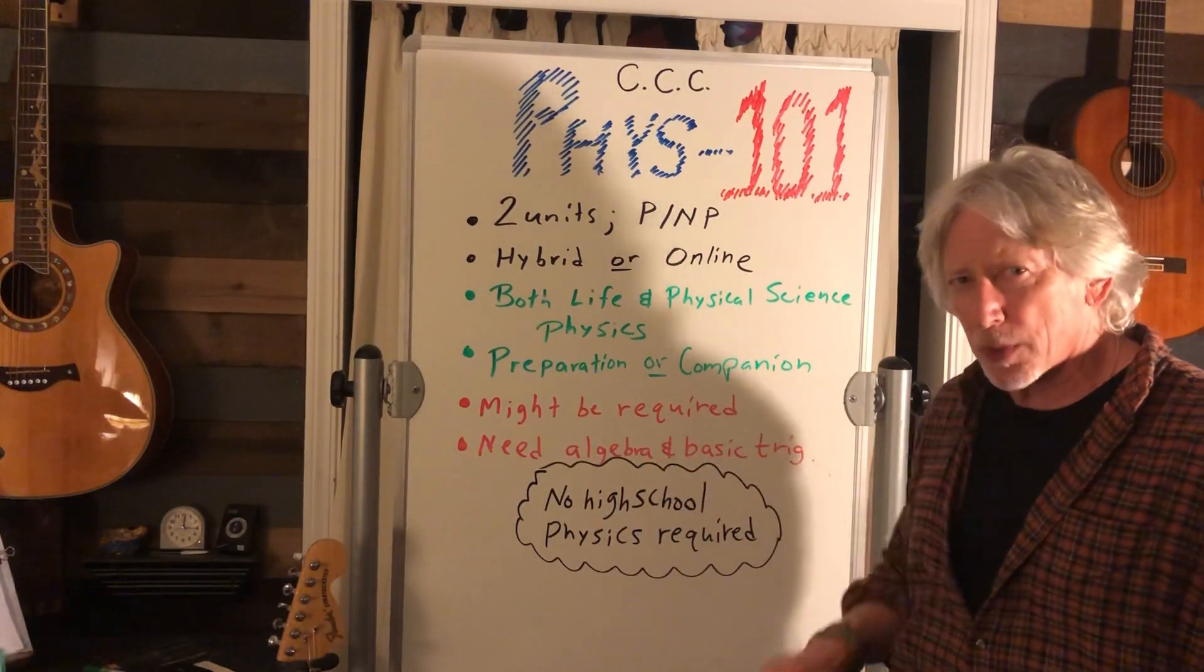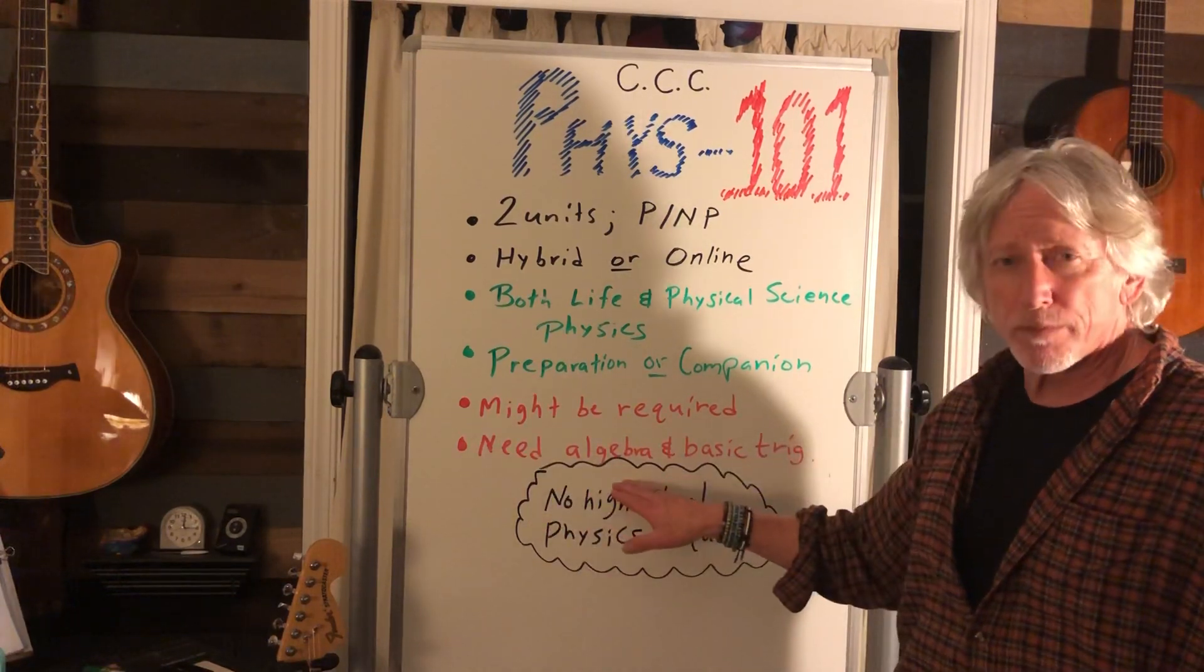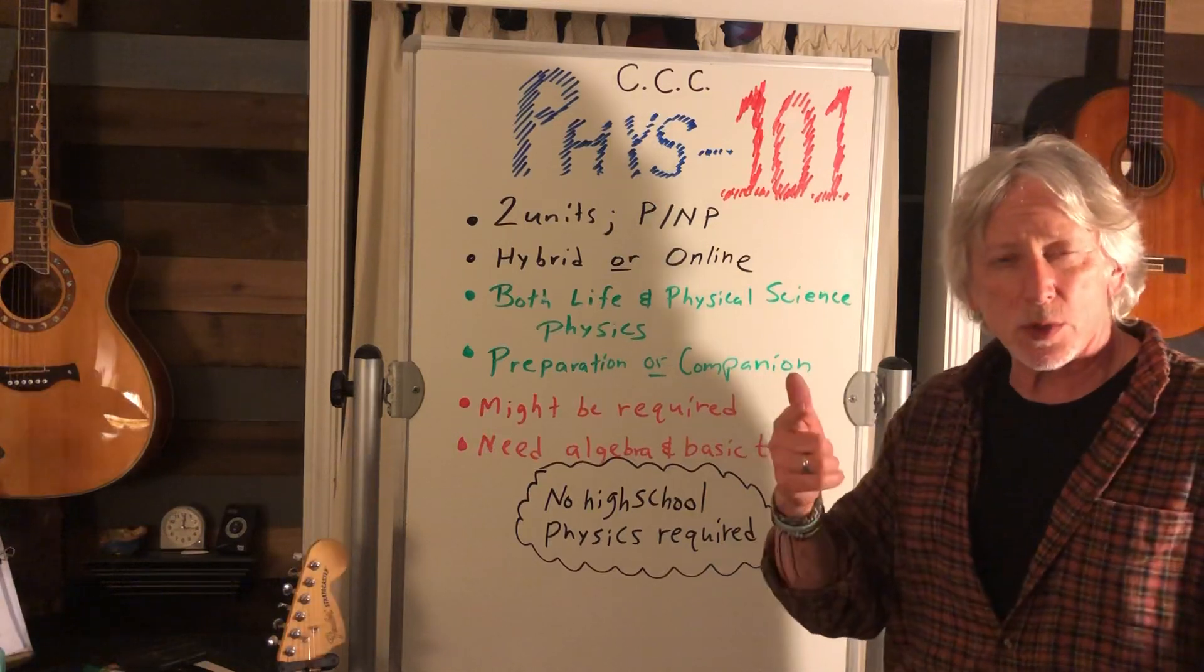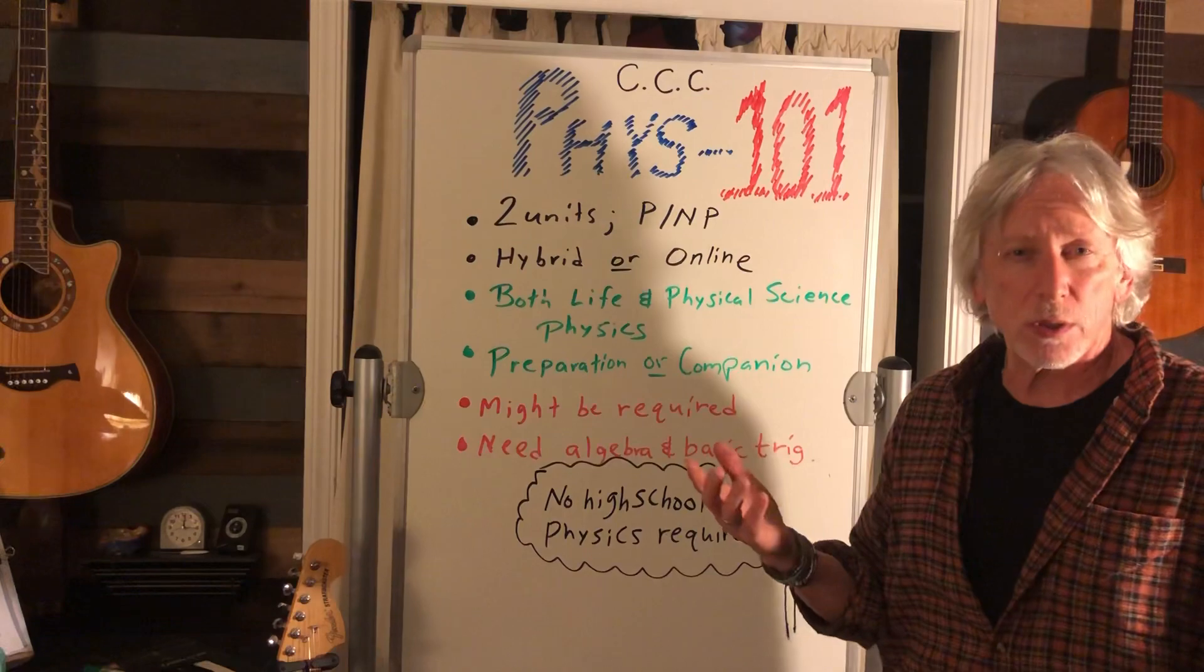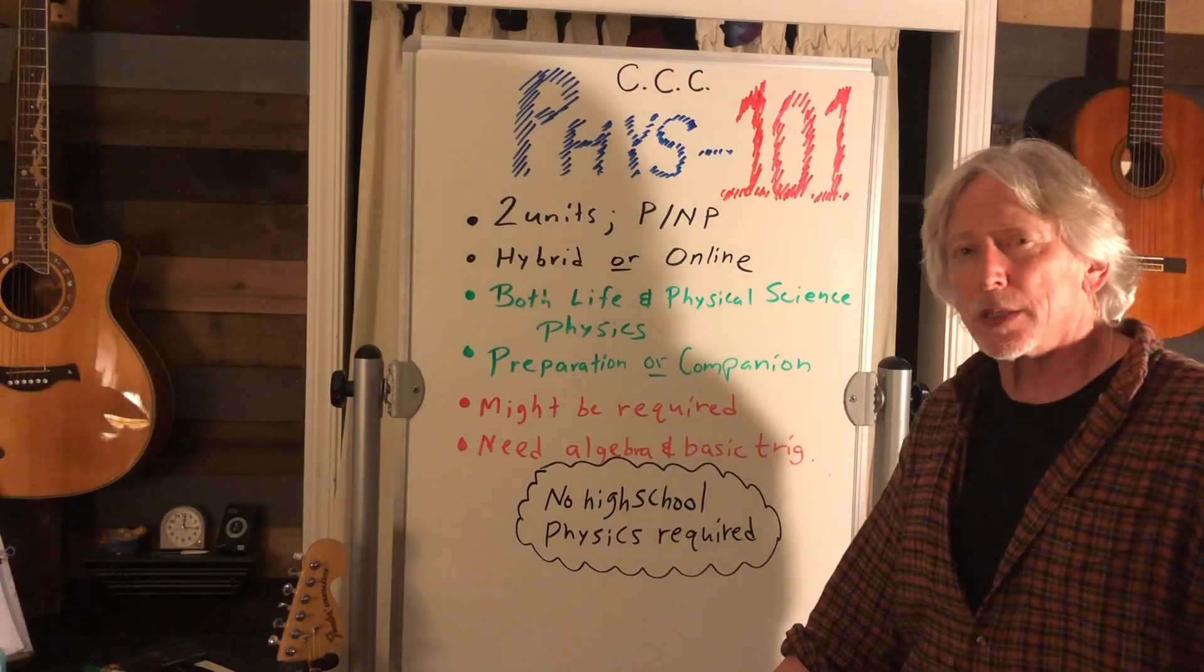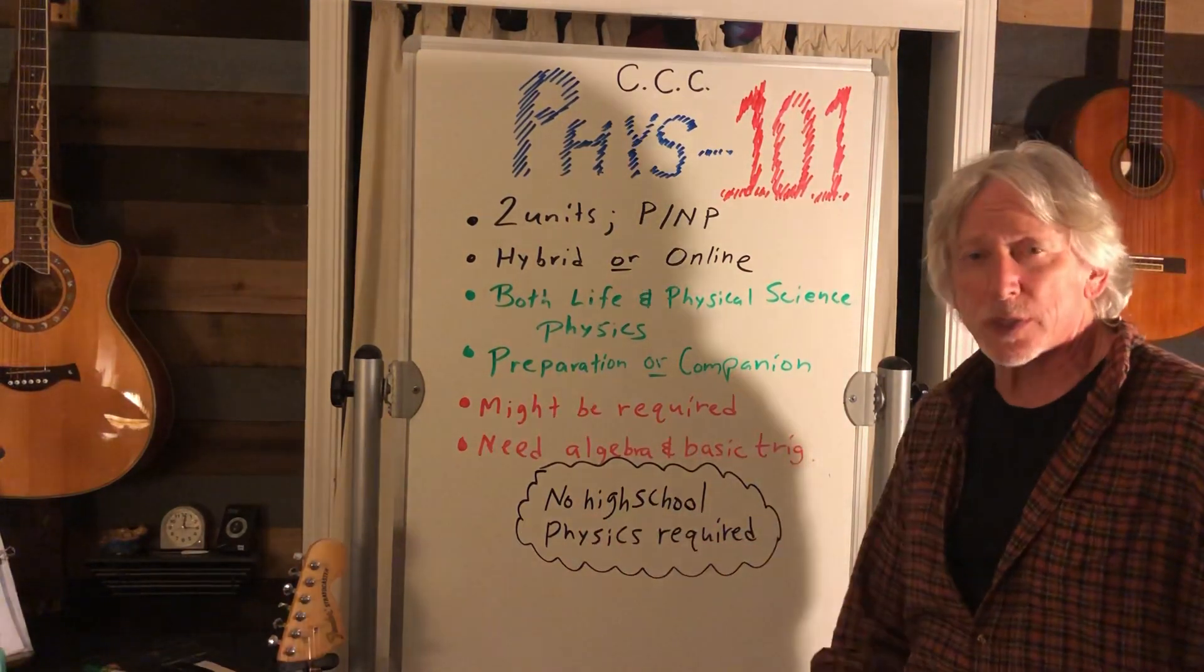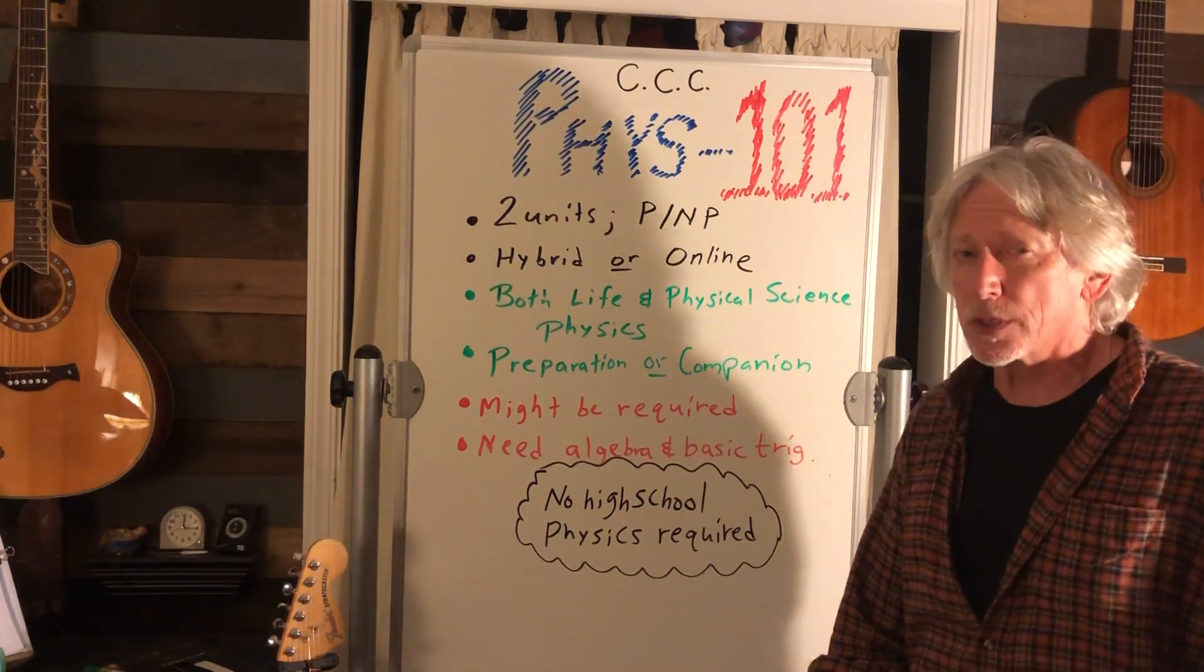It might be required. What you need for this course: we've taken away prerequisites because they create problems. You need algebra and you need basic trigonometry - sine, cosine, tangent, inverse tangent, Pythagorean theorem. If you've got calculus there's a small chapter employing that, but all you need are these things. You do not need high school physics. Physics is not required.